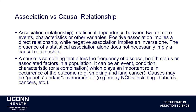A cause is something that directly alters the frequency of a disease like overdose or dependence, and the health status of an individual who's using that substance. It plays an important role in the occurrence of the outcome, whether it's the effect of smoking on lung cancer or the effect of heroin use on overdose. Causes can be genetic or environmental or a combination of the two, and this is true for many complex diseases like diabetes and cancer.